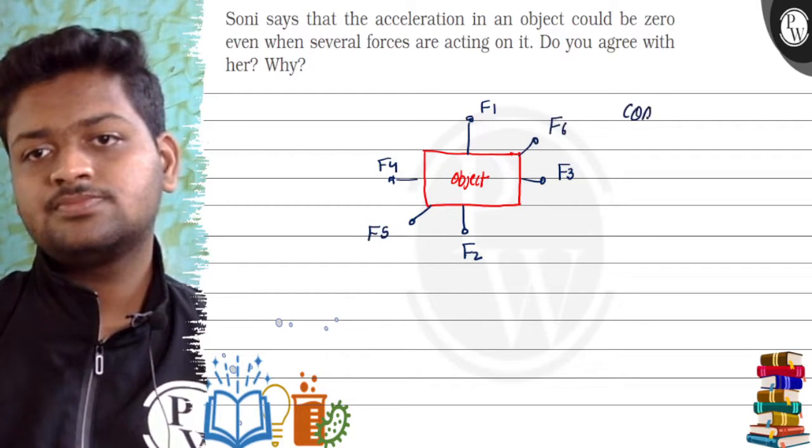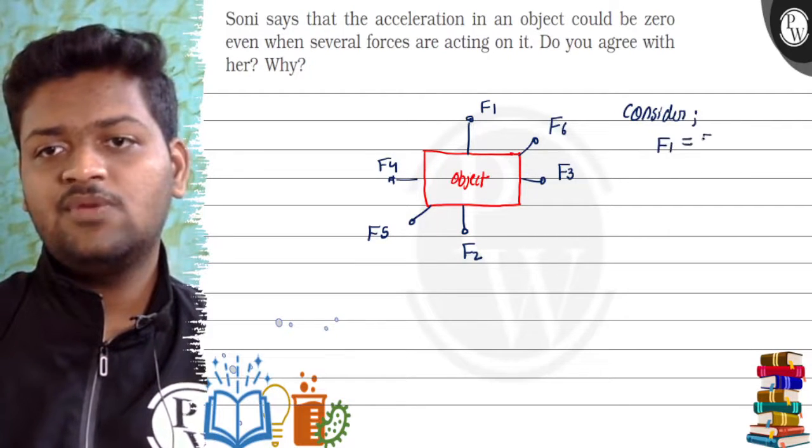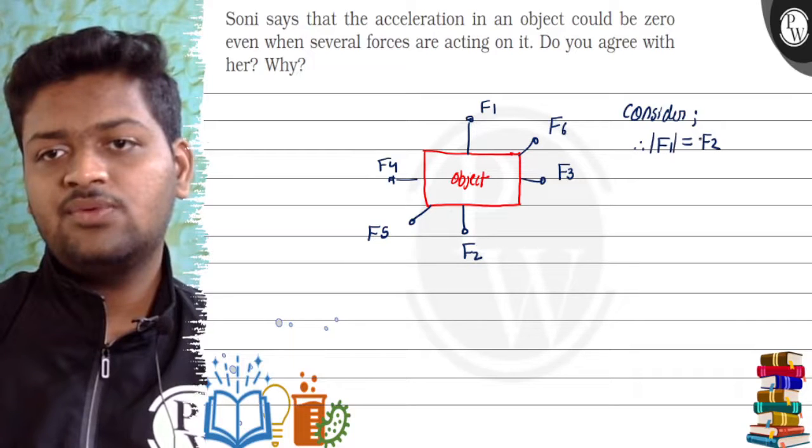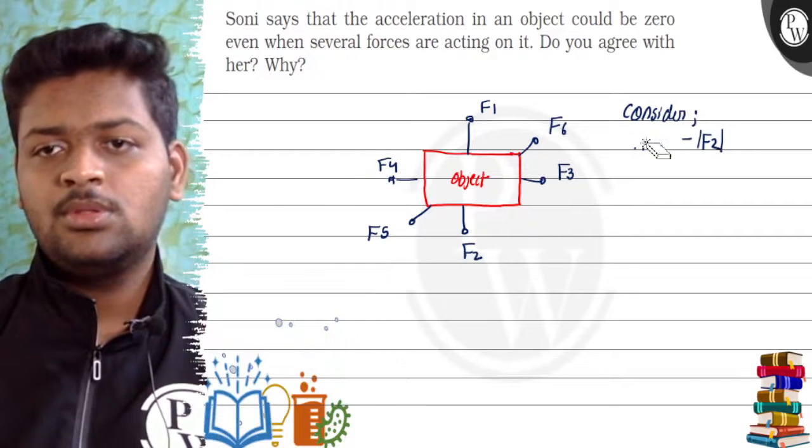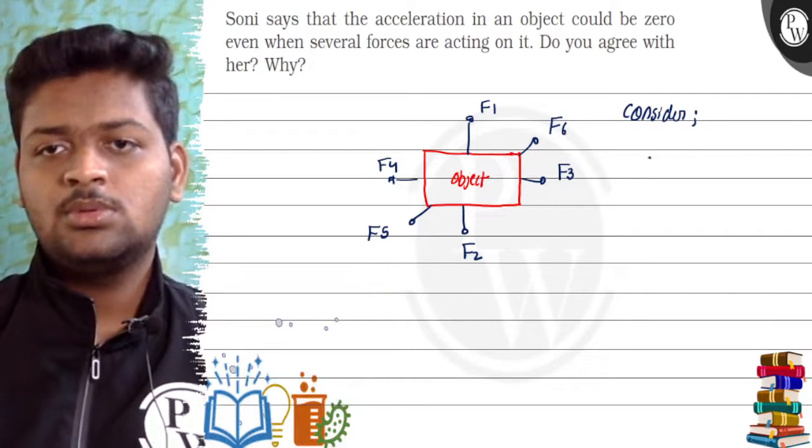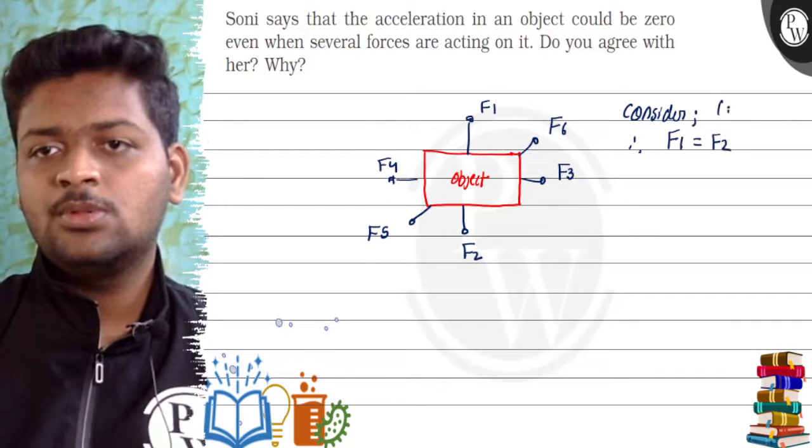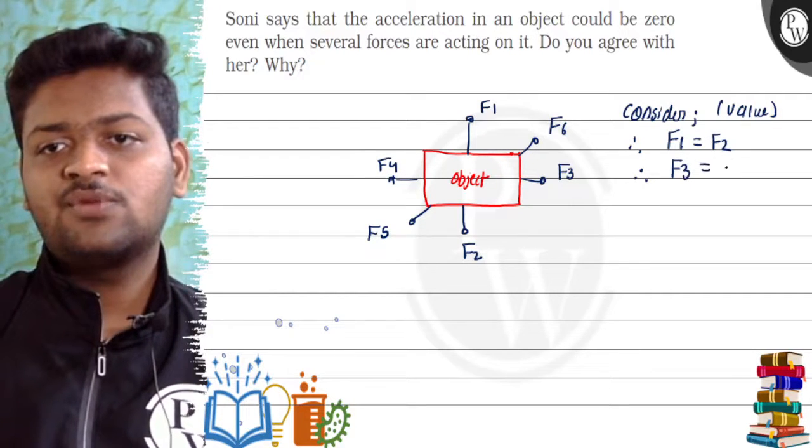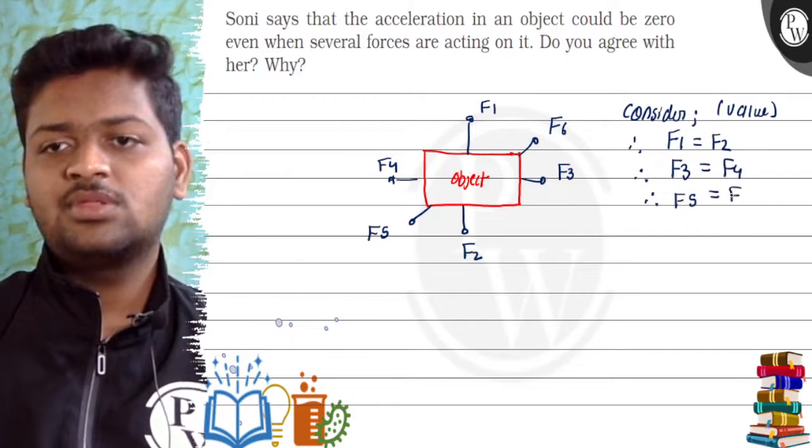Now consider F1 is equal to F2 in magnitude. Then consider F3 is equal to F4, and then consider F5 is equal to F6. Now what happens?